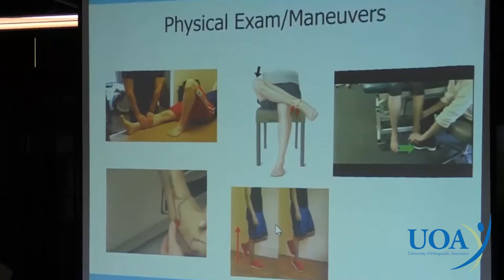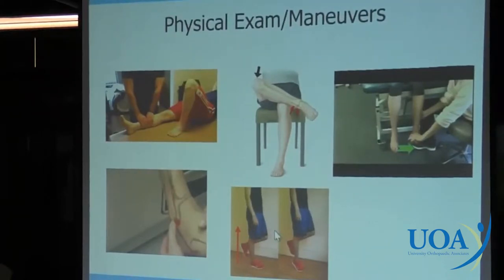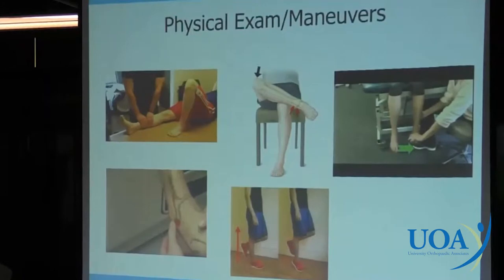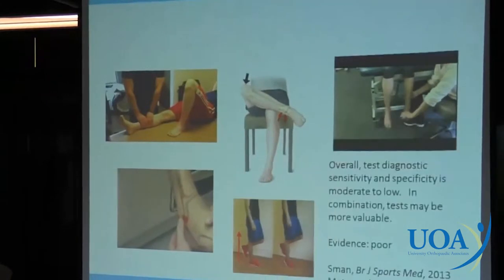With single leg hops: if they cannot do a single leg hop, you have to be very suspicious of a high ankle sprain. Whereas with a lateral ankle sprain, they actually can do a single leg hop — they may not want to, but if you ask them they can get up on their toes and get a couple hops in.